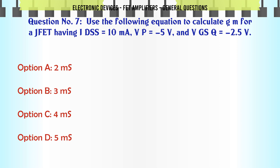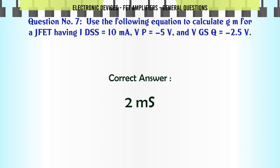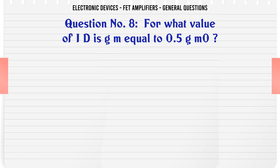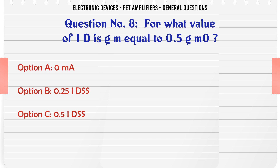Use the following equation to calculate GM for a JFET having IDSS = 10mA, VP = 5V, and VGSQ = 2.5V. A. 2mS. B. 3mS. C. 4mS. D. 5mS. The correct answer is 2mS.